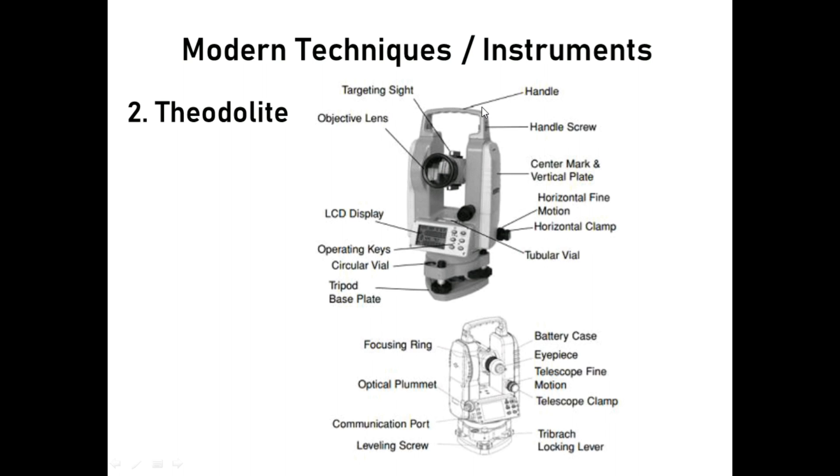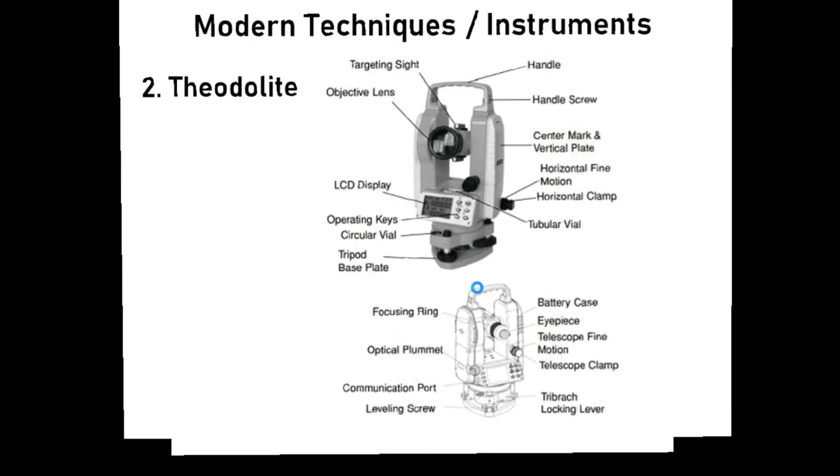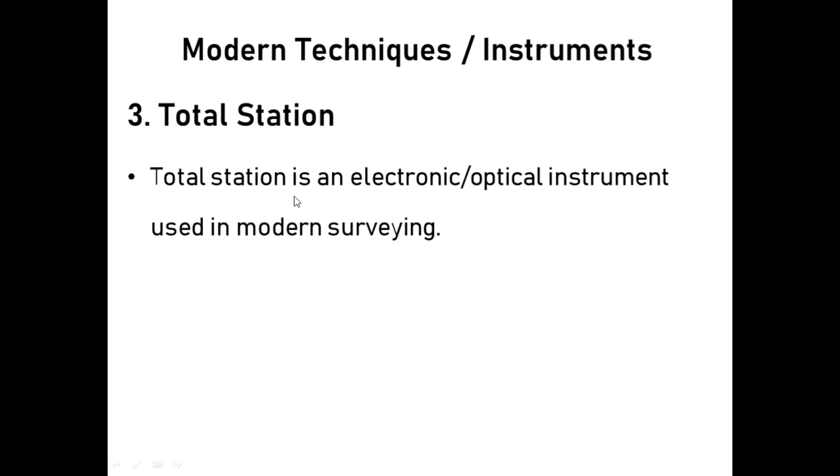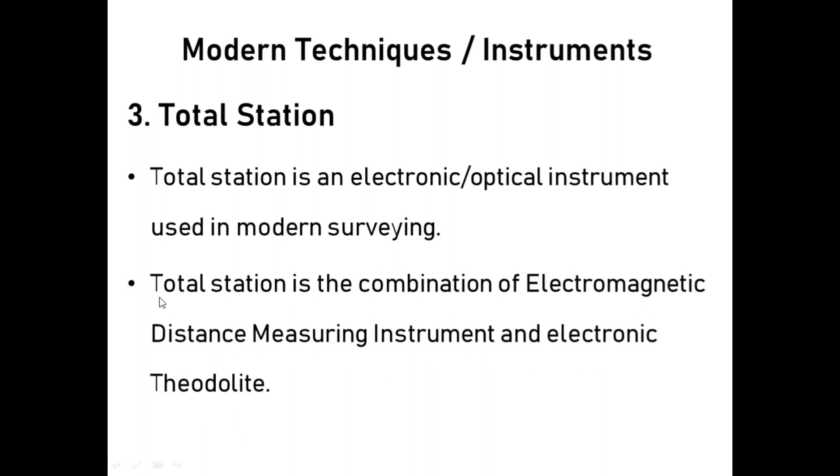In this slide you can read the components of the theodolite by pausing video. Now total station - total station is an electronic optical instrument used in modern survey. Total station is the combination of electromagnetic distance measuring instrument and electronic theodolite.